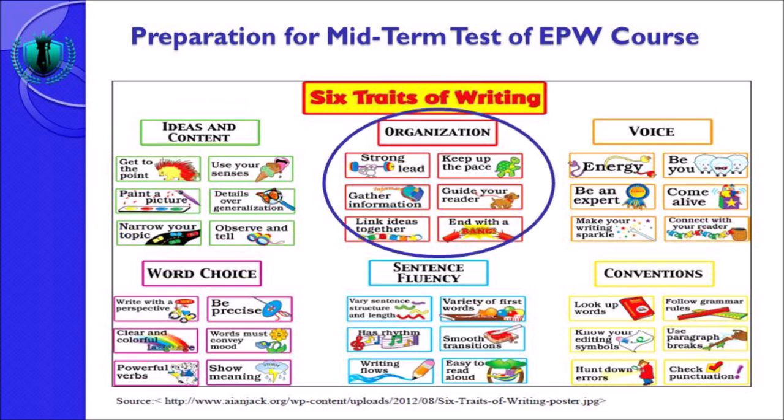Now we move on to the second trait of writing: organization. There are six aspects: strong lead, keep up the pace, gather information, guide your reader, link ideas together, and end with a bang. The first one is strong lead — anda menulis pada kalimat pertama sebagai lead dari ide yang anda maksudkan, yaitu topic sentence. Yang kedua, you should keep up the pace — tetap continue, harus signifikan dari kalimat pertama hingga kalimat akhir.